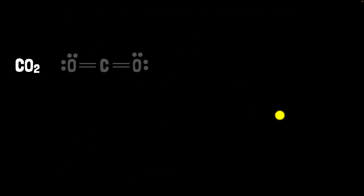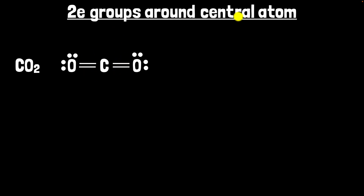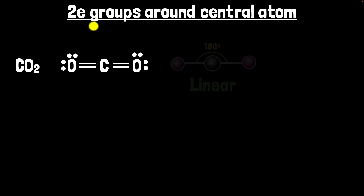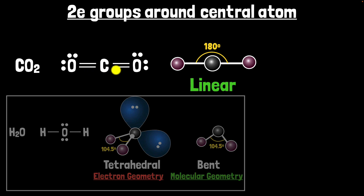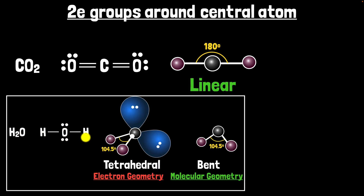Finally, let's consider carbon dioxide. The central atom is carbon. The double bond on each side each counts as one group, giving two electron groups total. We don't count the lone pairs on the oxygens because they're not on the central atom. With two electron groups, they'll be as far apart as possible — opposite each other — giving a linear structure with a bond angle of 180 degrees. This answers our original question: CO2 is linear because there are only two groups repelling each other. Water, by contrast, has four electron groups due to its lone pairs, giving tetrahedral electron geometry and a bent molecular geometry.